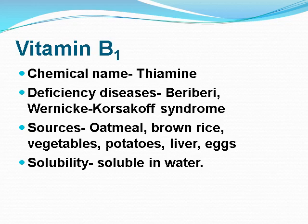Vitamin B1: its chemical name is thiamine. The deficiency diseases are beriberi and Wernicke-Korsakoff syndrome. Sources include oatmeal, brown rice, vegetables, potatoes, liver, and eggs. Solubility: it is soluble in water.